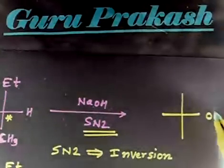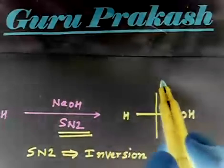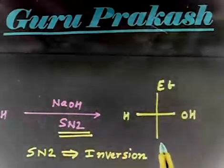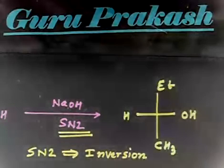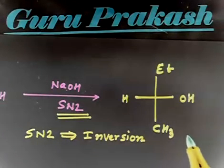So, this means I have to add OH from this side. OH, H. And this side I will have Et. And this side I will have CH3. So, this will be the final product for this reaction. That is SN2 with inversion.